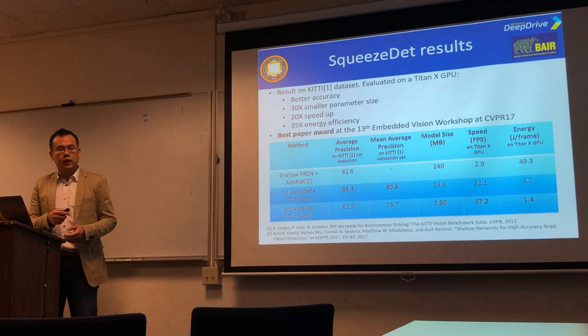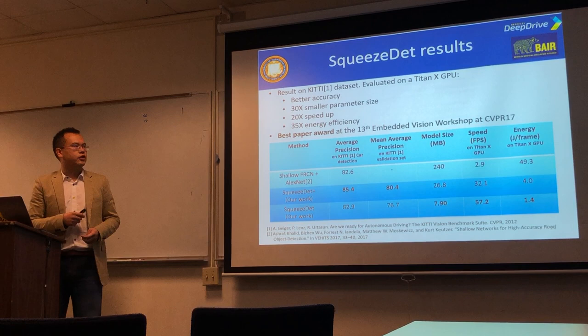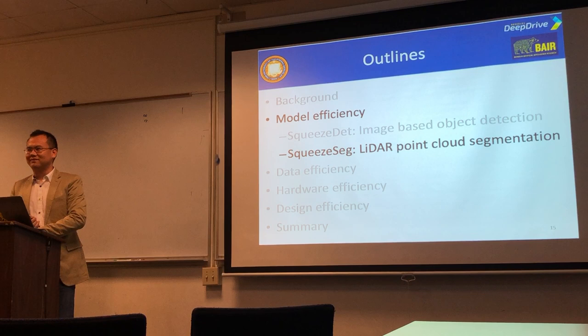Because SqueezeNet is very lightweight and ConvDet is just one convolutional layer, parameter size and computation cost are very small. When we tested SqueezeDet on the KITTI dataset, we achieved better accuracy than our previous work with 30x smaller parameter size, 20x better speed, and 35x better energy efficiency. We were lucky that this paper received a best paper award at the CVPR Workshop in 2017.